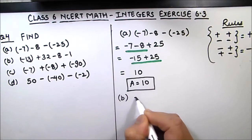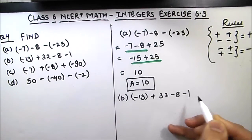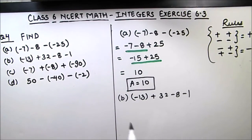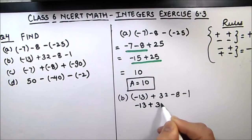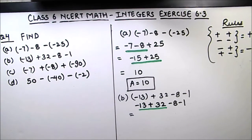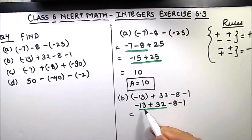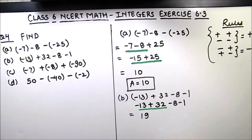Part B is minus 13 plus 32 minus 8 minus 1. The first step is to remove the brackets, giving minus 13 plus 32 minus 8 minus 1. Moving left to right, we take minus 13 and plus 32 first — opposite signs, so we subtract: 32 minus 13 is 19, and the sign of the bigger number is positive, so plus 19.